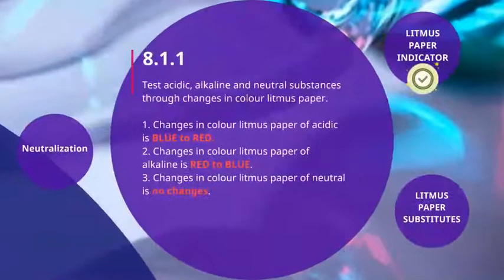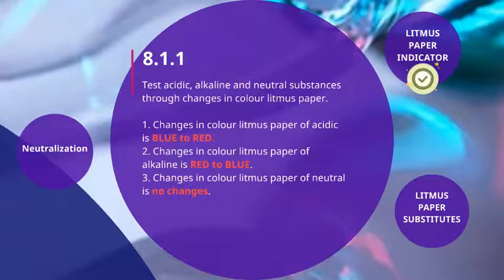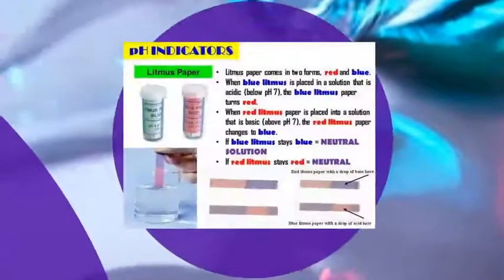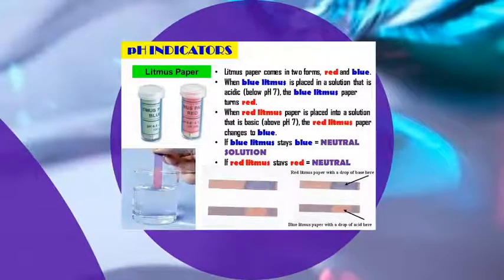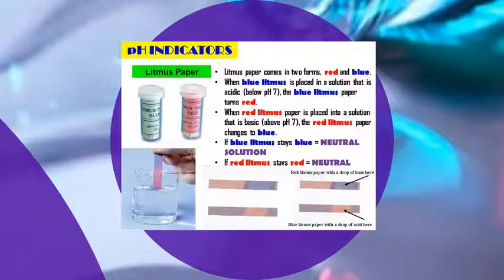Learning standard 8.1.1: test acidic, alkaline and neutral substances through changes in colour of litmus paper. Do you know what litmus paper is? Litmus paper is an indicator used to determine whether a substance is acidic, alkaline or neutral.